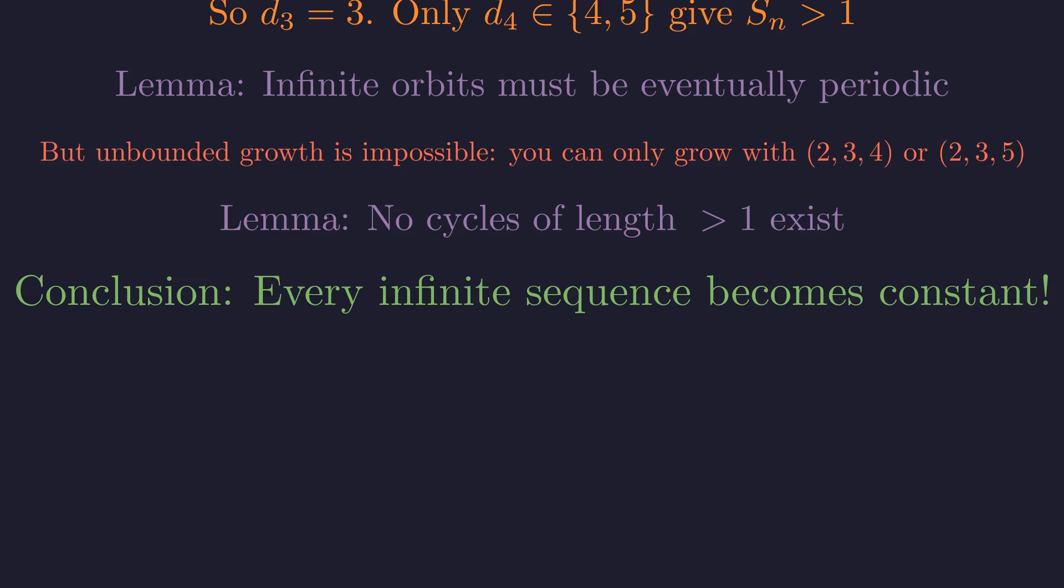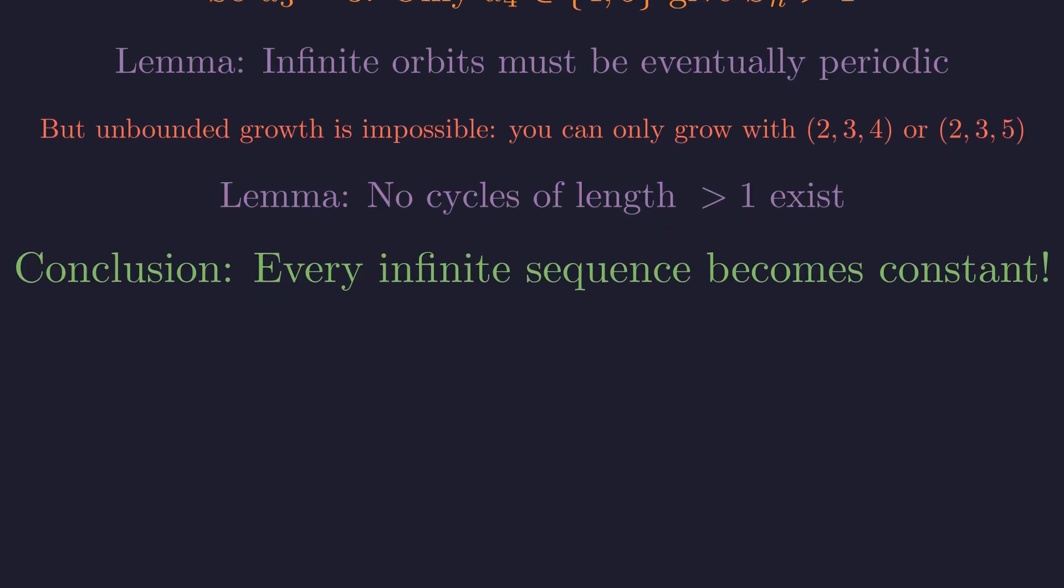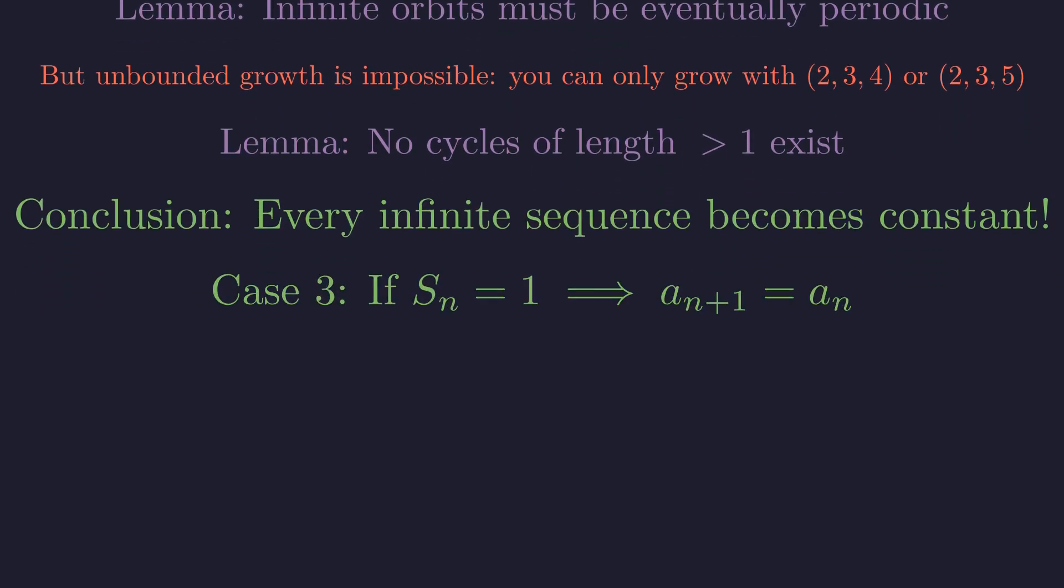The crucial conclusion is that any valid sequence must eventually become constant. This means from some point on, a_{n+1} equals a_n. Our problem now reduces to finding these stable numbers, and any numbers that can lead to them. For a term to be equal to the next, the multiplicative factor S_n must be exactly 1. This is the condition for stability.